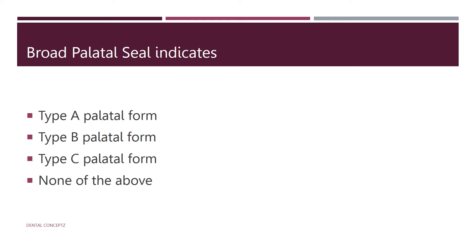Next: broad palatal seal indicates what? The broad palatal seal is often associated with type A palatal form, where the soft palate is horizontal as it extends posteriorly with minimal muscular activity. A considerable number of millimeters separate the anterior and posterior vibrating lines, allowing for a wide posterior palatal seal. Type A palatal forms are considered the most favorable configuration since more tissue surface can be covered, resulting in a more retentive denture base. The answer is type A palatal form.